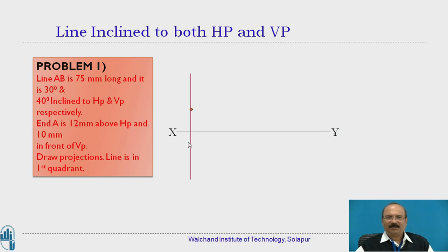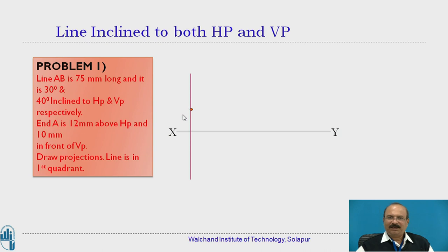You are going to draw a vertical line for measurement purposes. Point A is situated in both the front view and top view. The position of A is given as 12 mm above the horizontal reference plane. The XY line itself is considered as the horizontal reference plane as well as the vertical reference plane. Any measurement above the XY line indicates the distance from the horizontal reference plane. So here it is 12 mm, and that point is located as A dash. All notation in the front view uses a dash mark. This point is A dash and this distance is 12 mm.